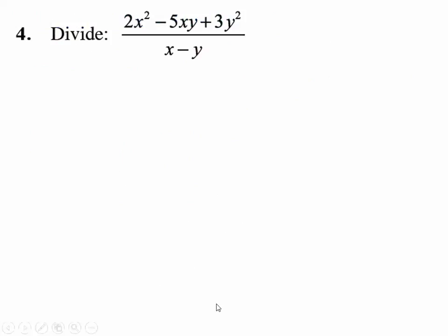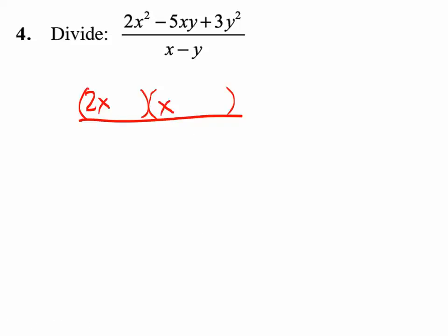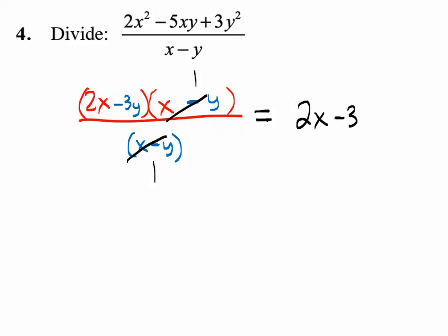For number 4, divide by factoring numerators and then dividing out common factors. Let's see if we can factor the top polynomial. 2x squared times x is probably the only way to handle that leading term. The only way to get a 3y squared is negative 3y times negative 3y — they have to be negative because the middle term is negative. The bottom does not change but does reduce with something, leaving 2x minus 3y.